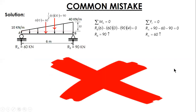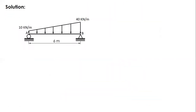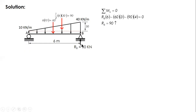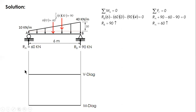Let's proceed to the correct analysis. The procedure is similar: subdivide the load, get the resultants, solve for RB and RA, then draw the shear diagram — upward 60, down to negative 90 — which is the same second-degree curve, closed.